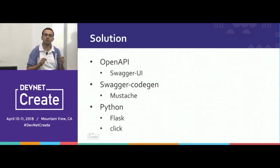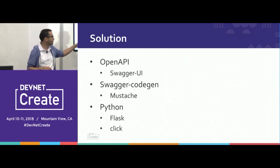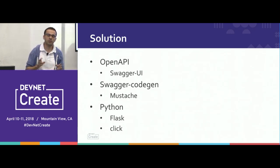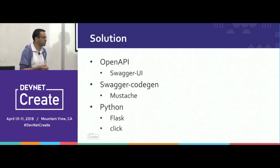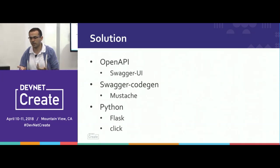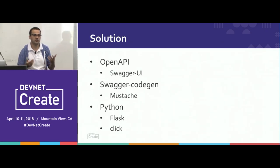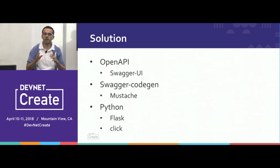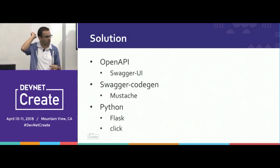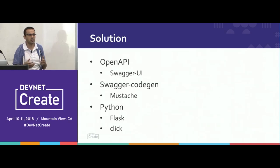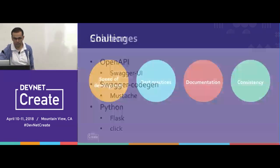I'll show some quick examples using two Python libraries: Flask for the server — I'm going to build a Spark server that emulates the Spark API, just as a proof of concept — and then Click, another Python library, to build a Spark CLI. In case you want to do some automation, like adding 100 people to a room, it's easier to go through a CLI than going to the interface and doing all those clicks. Those are the solutions I'm going to show to address the challenges I mentioned: speed of development, best practices, documentation, and consistency.